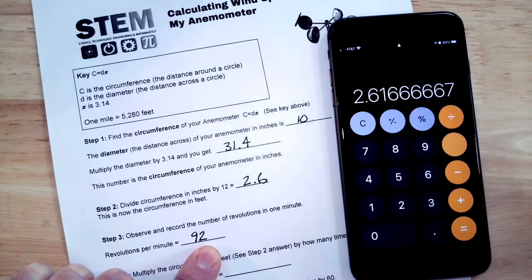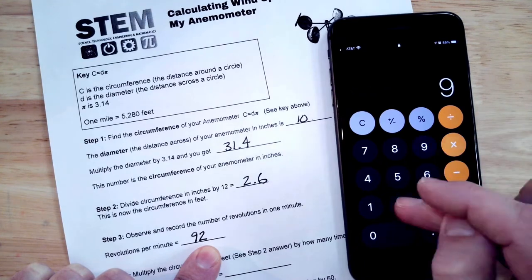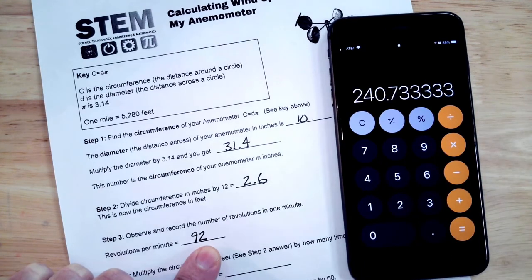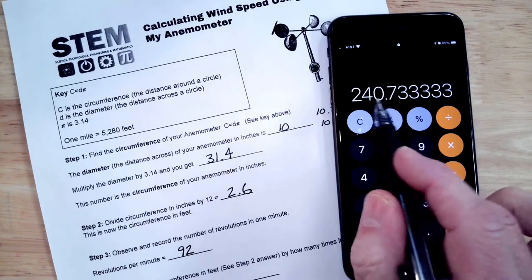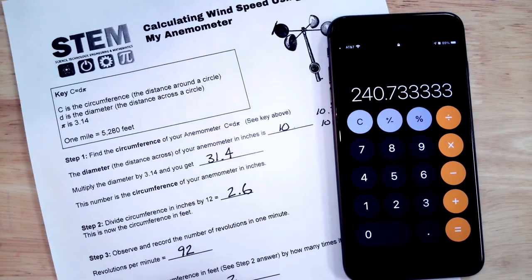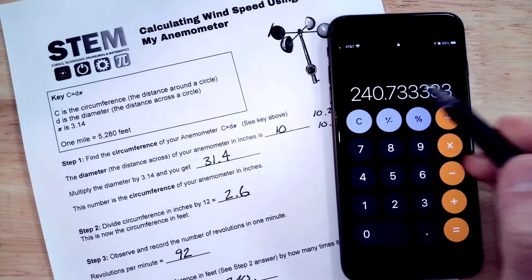I'm just going to multiply that by 92, that's not going to make too much of a difference, and that gives us about 240, and we'll just go to the tenth here, we'll just go to 240.7.